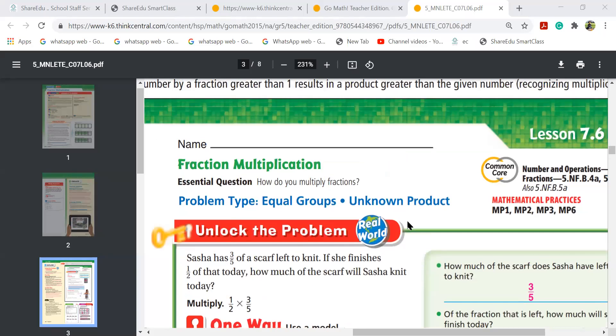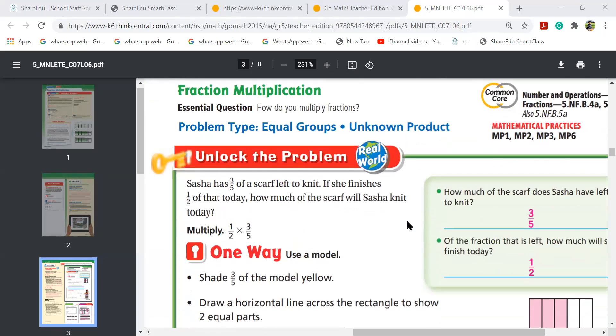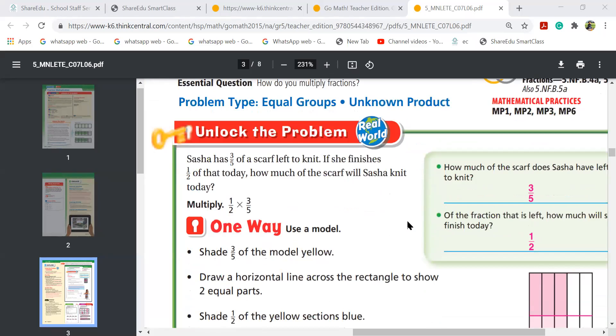We will start with lesson 7.6 fraction multiplication. Please write today's date, 11th February, and then we will start doing the first question. Sasha has three-fifths of this scarf left to knit. If she finishes half of today, that means three-fifths of a half, that means half of three over five.